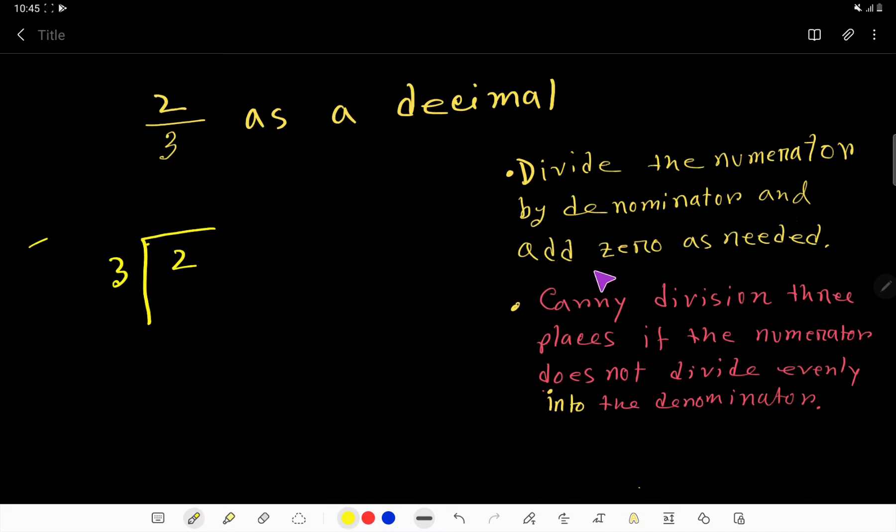Divide the numerator by denominator and add zeros as needed. And you have to also read this line: carry division three places if the numerator does not divide evenly into the denominator.